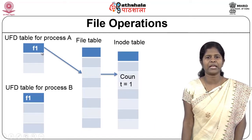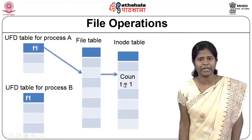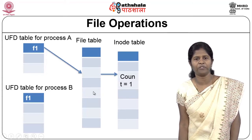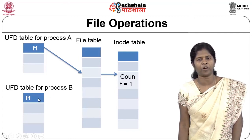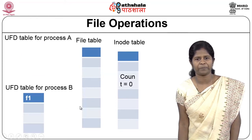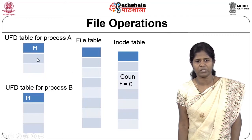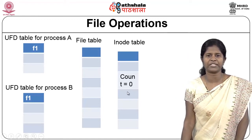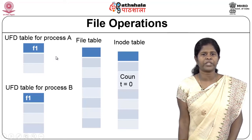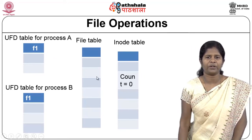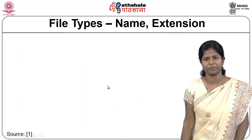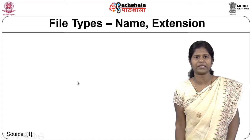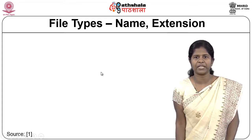When process B closes the file, the count in the iNode table is decremented from 2 to 1 and its file table entry is removed. When process A also closes the file, the count becomes 0, all pointers are removed, and the iNode table entry can be removed as well. This is how opening, closing, reading, and writing are managed using the user file descriptor table, file table, and iNode table.